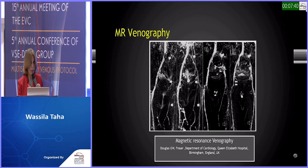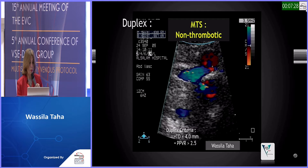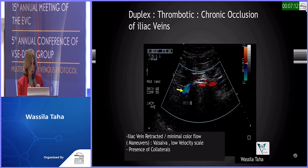This is MR venography showing left iliac vein occlusion. This is CT venography beautifully detecting May-Turner syndrome, where the left common iliac vein is compressed by the right common iliac artery. Here by duplex, we see the proximal left common iliac vein compressed by the right common iliac artery, and even the collaterals around the tight stenosis are depicted. This is a chronic iliac vein occlusion — the left common iliac vein is thread-like with very minimal color flow.